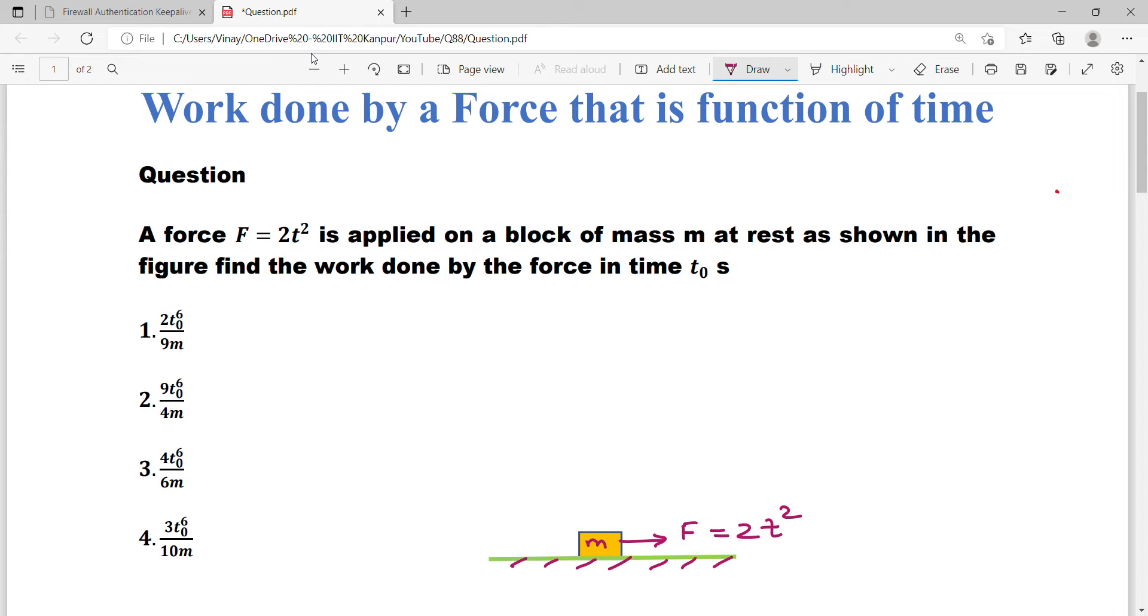Let me read the question for you. A force F equal to 2t² is applied on a block of mass m at rest as shown in the figure. Find the work done by the force in time t₀.